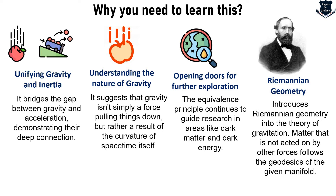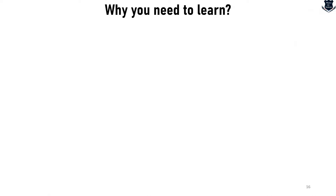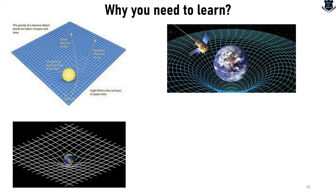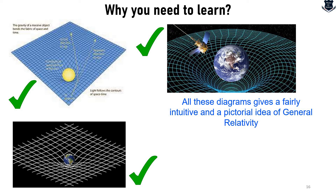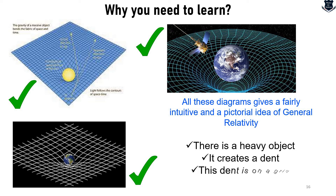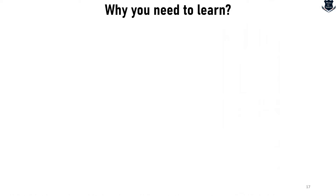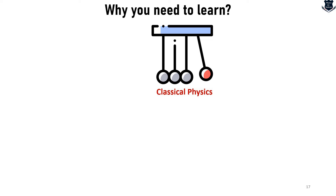When learning general theory of relativity you will see these types of pictures — diagrams of a rubber sheet with a heavy ball creating a dent on a grid. Some people say these are not mathematically rigorous, but I would say they are absolutely fine. These diagrams give a fairly intuitive and pictorial idea of general relativity. They show a heavy object placed on a bed sheet creating a dent, which is directly depicted on a grid.